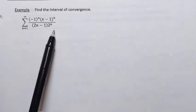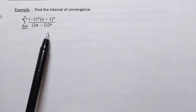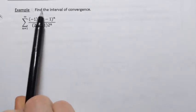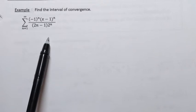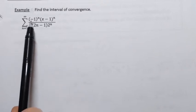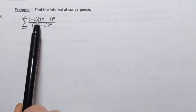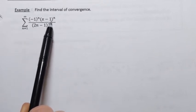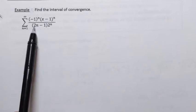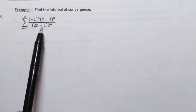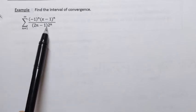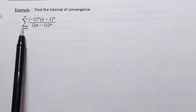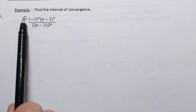We need to find the interval of convergence for the following power series. Its general term is negative 1 to the power n times x minus 1 to the power n, over 2n minus 1 times 2 to the power n, and n goes from 1 to infinity.